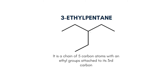Second to last is 3-ethylpentane, which is a chain of 5 carbon atoms with an ethyl group attached to its third carbon. Here, instead of a methyl group, we have an ethyl one — it is a group of 2 carbon atoms.